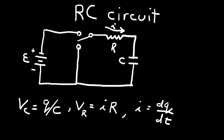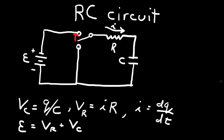We want to know what happens when initially there's no charge on the capacitor, but then we close the switch. Closing the switch connects the battery to the circuit, so we have the battery and the current flowing across the resistor, into the capacitor, and then flowing back to the battery. We can write down Kirchhoff's voltage law, which states that the EMF is equal to the voltage drop across the resistor plus the voltage drop across the capacitor.